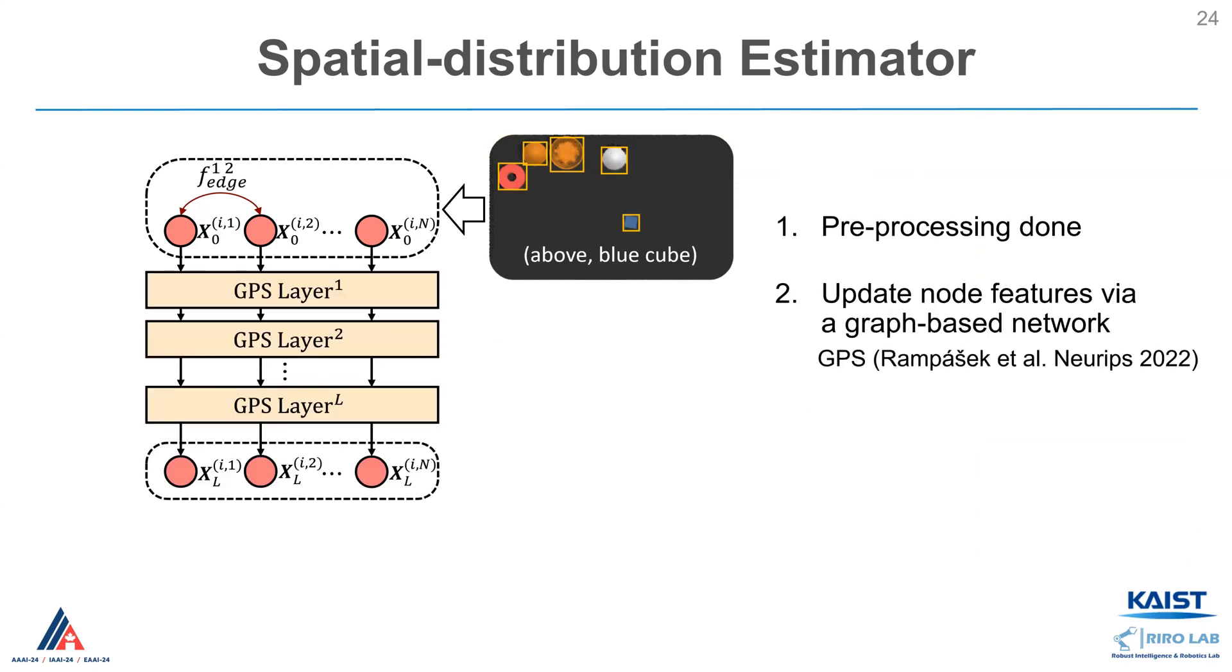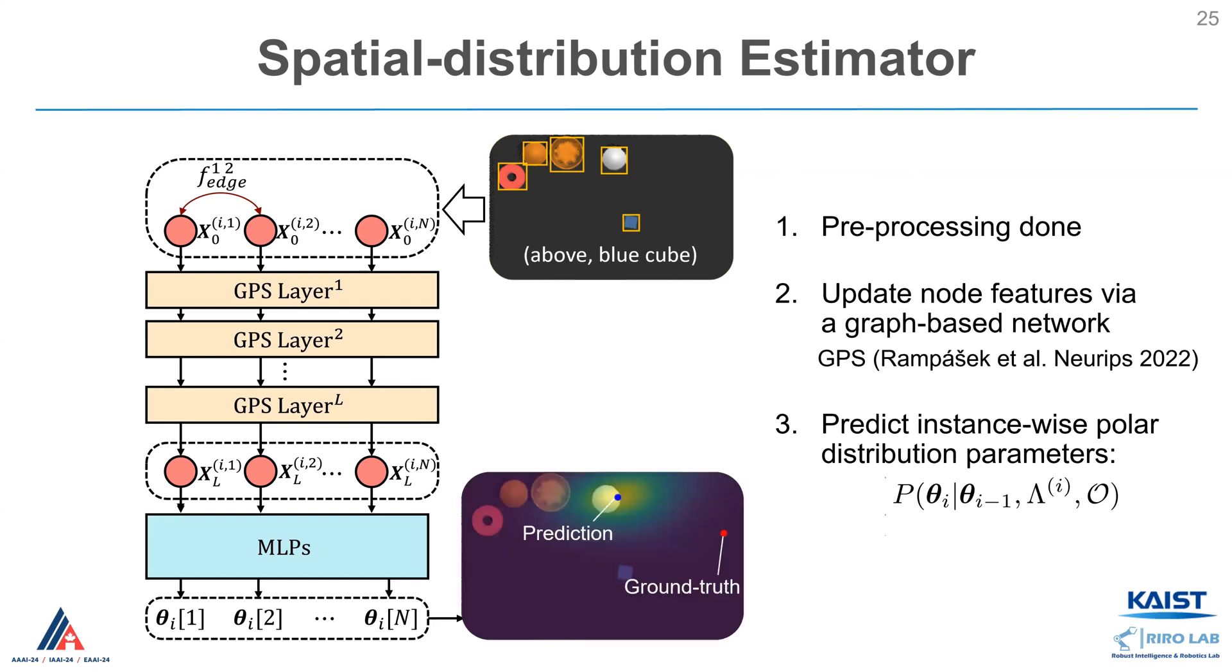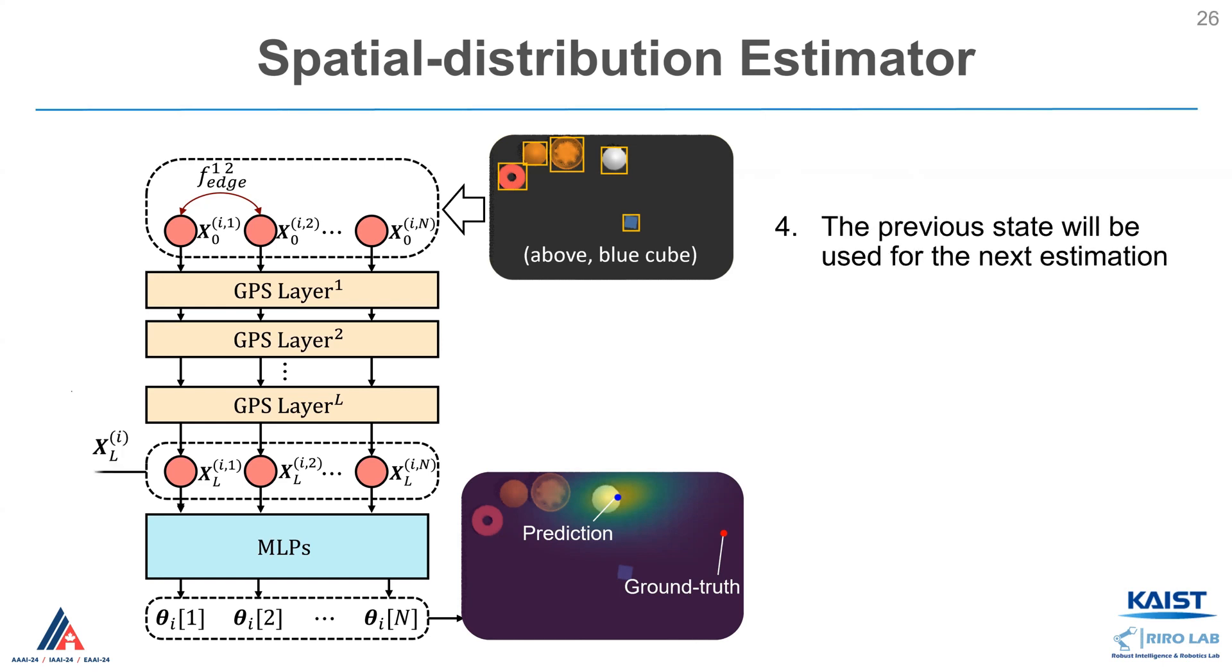Next, each node feature will be updated via a graph-based network. Then, the estimator predicts instance-wise polar distribution parameters via MLPs. The state from the last hidden layer will be used as a previous state, and will be used for the next estimation.